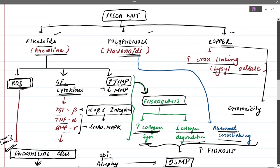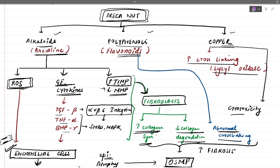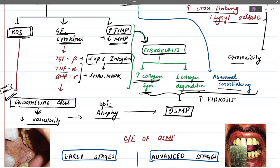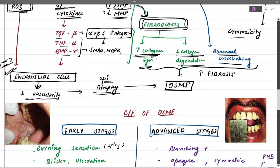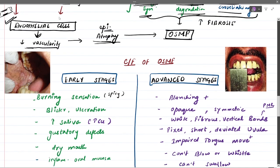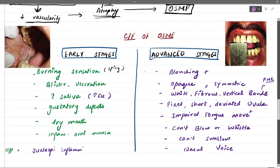To summarize the pathogenesis: alkaloids, polyphenols, and copper are the key components. Copper increases cross-linking; arecoline causes the release of growth factors, cytokines, reactive oxygen species, and TIMPs. These molecules stimulate fibroblasts to increase collagen synthesis and decrease collagen degradation, increasing fibrosis and causing OSMF.